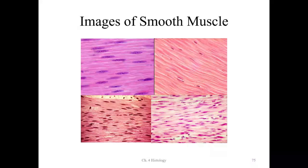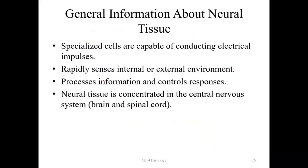Some students confuse smooth muscle with stratified squamous epithelium. The key identifying feature to look for is the elongated nuclei — those elongated nuclei will stand out and help you recognize smooth muscle. The cells are layered and tapered in shape, giving them that characteristic appearance.